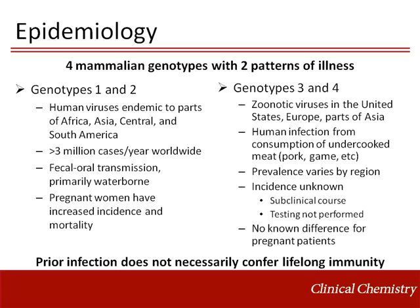You can really break down the hepatitis E infection into two patterns that split along geographic and genotypic lines. Let's start with genotypes 1 and 2. These genotypes are human viruses that are endemic to parts of Africa, Asia, and Central and South America. In fact, in some of these regions, hepatitis E represents the majority of acute hepatitis, more than even hepatitis A.